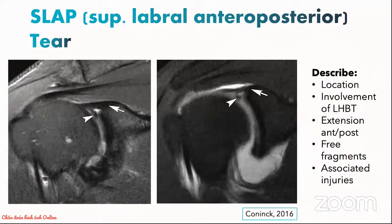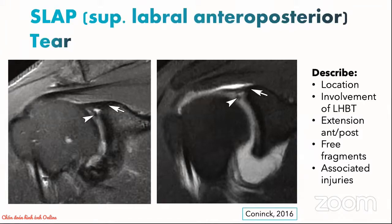Some examples of SLAP lesions: the coronal image on the left demonstrates a type 3 SLAP tear. The arrowhead points to the displaced bucket-handle flap from a superior labrum tear, while the arrow points to a normal-looking long head biceps tendon inserting into the superior aspect of the glenoid. The coronal image on the right demonstrates another superior labrum tear, but now the adjacent long head biceps tendon insertion is irregular and attenuated, so this actually represents a type 4 SLAP tear.